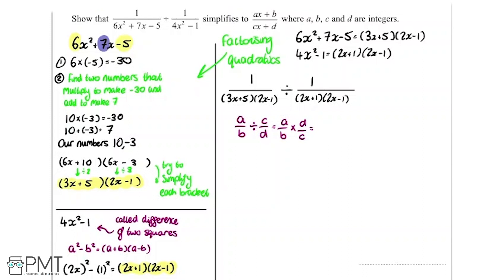which equals ad over bc. So essentially the rule is that when you're dividing by a fraction, you flip this fraction over and then multiply them.